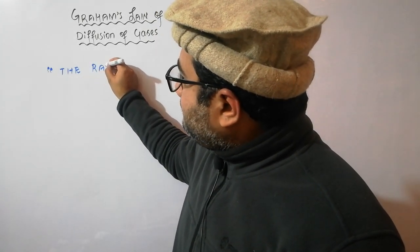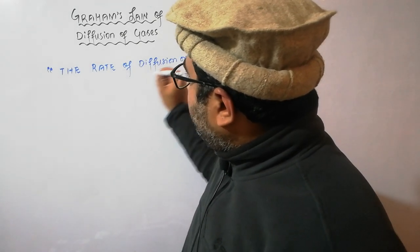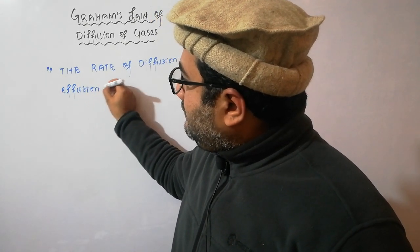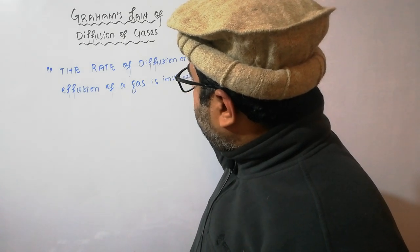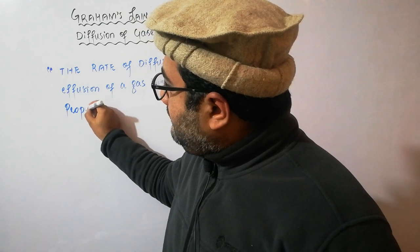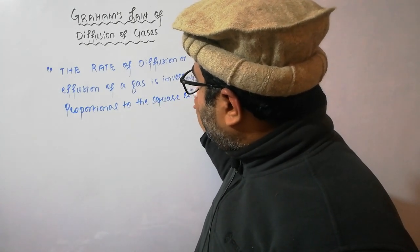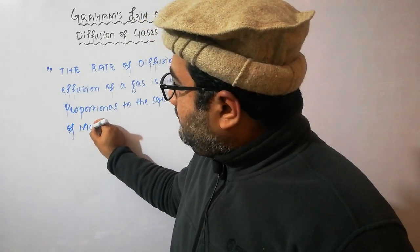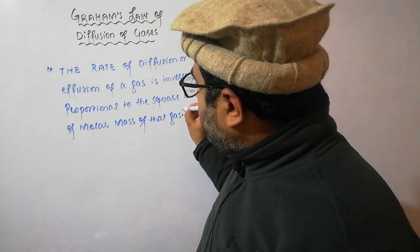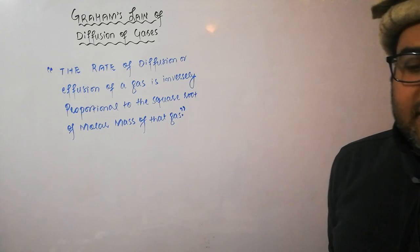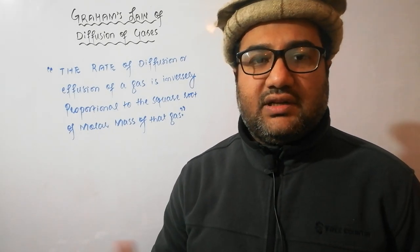According to Graham's Law, the rate of diffusion or effusion of a gas is inversely proportional to the square root of the molar mass of that gas. In simple words, heavier gases diffuse slowly while lighter gases diffuse rapidly. This is all about Graham's Law.